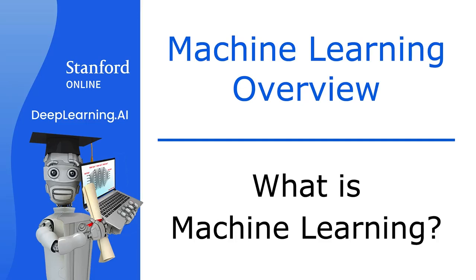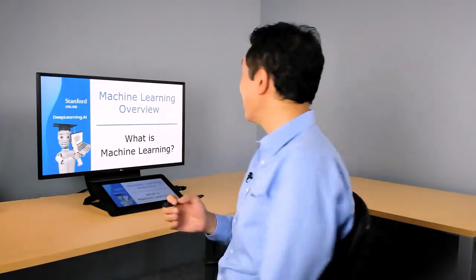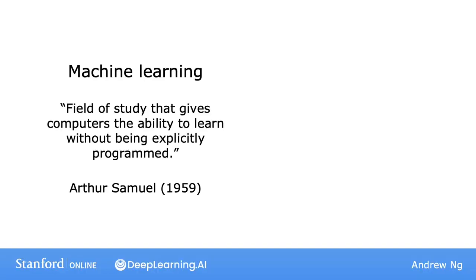So what is machine learning? In this video you'll learn a definition of what it is and also get a sense of when you might want to apply it. Let's take a look together. Here's the definition attributed to Arthur Samuel: he defined machine learning as the field of study that gives computers the ability to learn without being explicitly programmed.